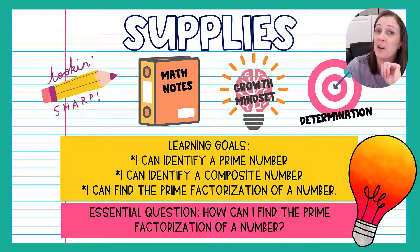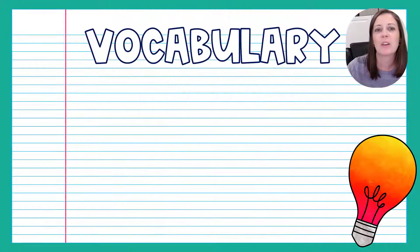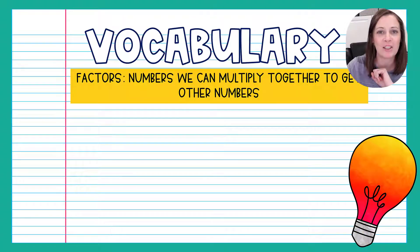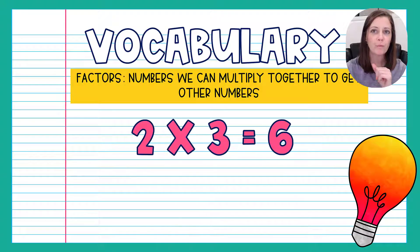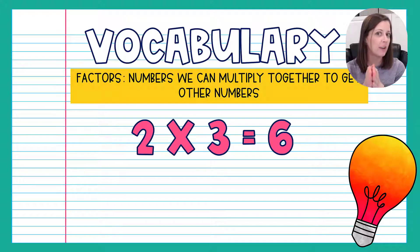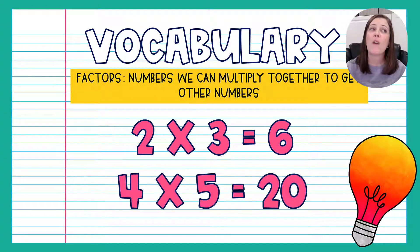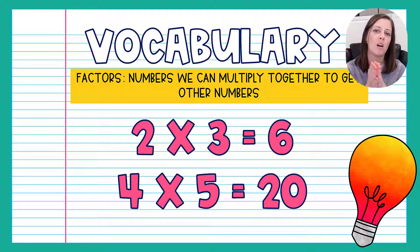We've got a lot of vocabulary today, and that's what we're going to start with, because before we can find prime factorization we've got to know our vocab. First word up today is factors. Factors are numbers that you can multiply together to get another number. For example, two and three are factors of six because two times three equals six. Similarly, four and five are both factors of 20 because four times five equals 20.